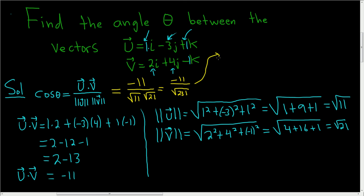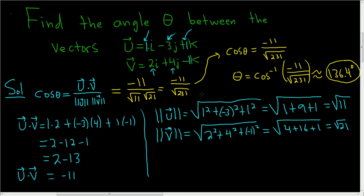So we know that the cosine of theta is equal to negative 11 over the square root of 231. So theta is the inverse cosine of negative 11 over the square root of 231. And this is approximately equal to, using a calculator in degree mode, 136.4 degrees. So that is the angle between these two vectors. I hope this helps.